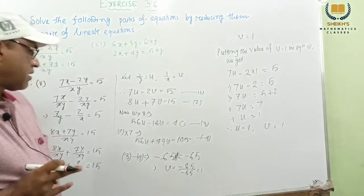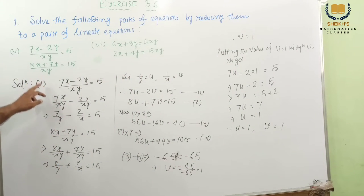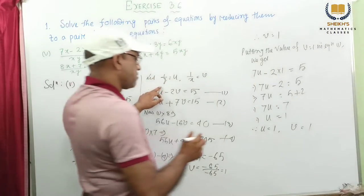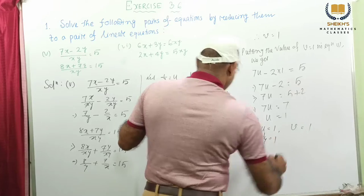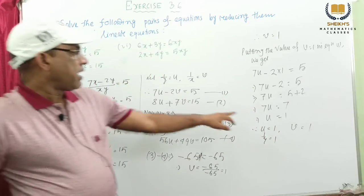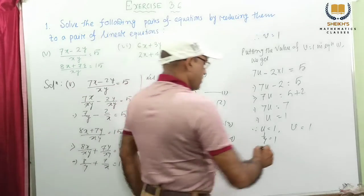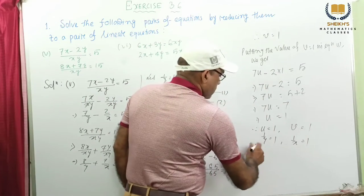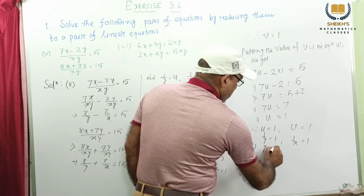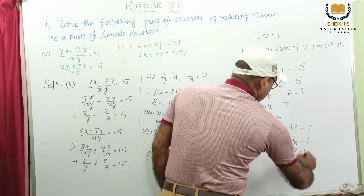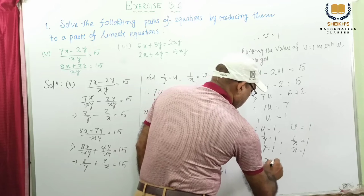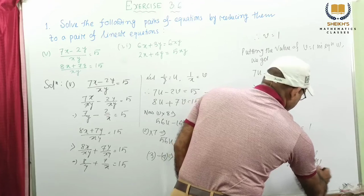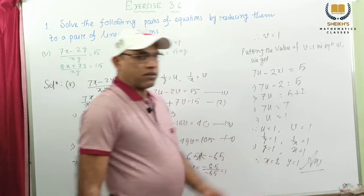Both are 1. But u means what is u? U means 1 by y. So this is 1 by y equal to 1. And v means 1 by x. So this is 1 by x equal to 1. If we take the reciprocal, then y equal to 1 and x equal to 1. Therefore x equal to 1, y equal to 1. Answer is 1, 1. This is the answer.